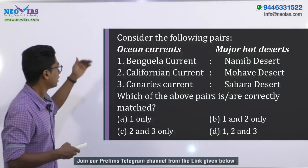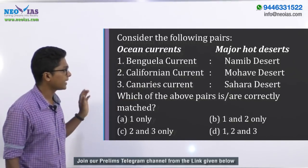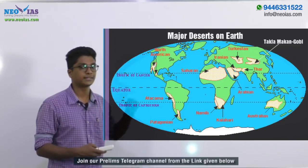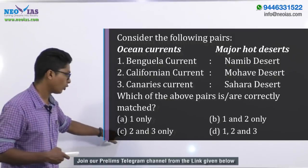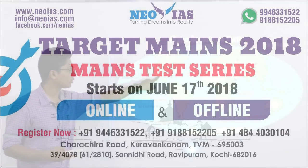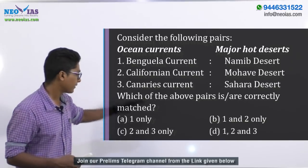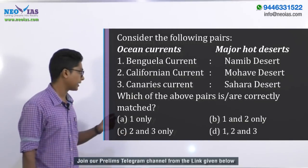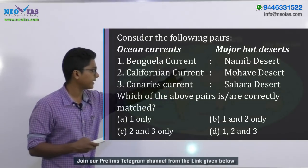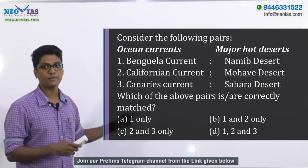Coming back to the question — it's a pair type question and we have to find which is correctly paired. First: Benguela current matched with Namib Desert — correct. Second: Californian current matched with Mojave Desert — correct. Third: Canaries current matched with Saharan Desert — also correct. So all three statements are correctly paired and the answer is option D, which is 1, 2, and 3.